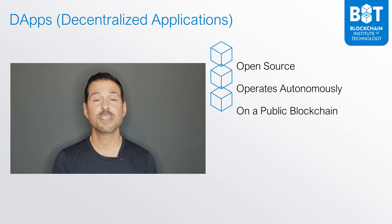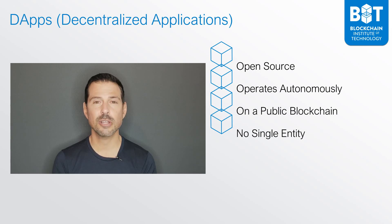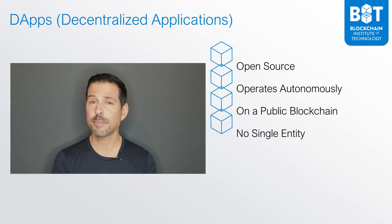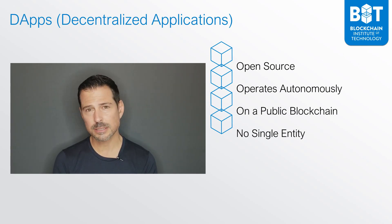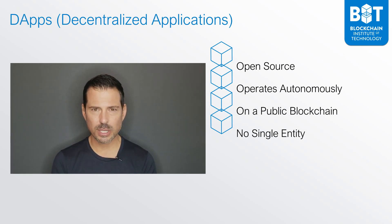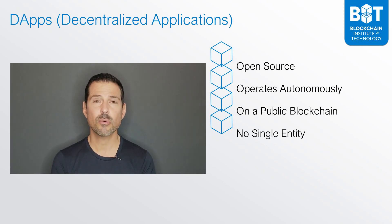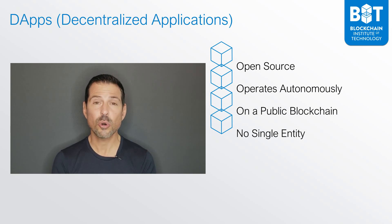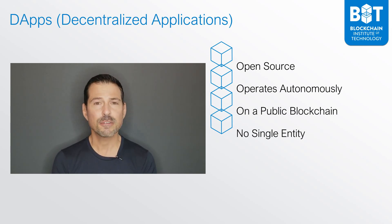A dApp must simply have no single entity that actually makes the decisions for it, and no single entity can control the majority of its tokens. Any changes to Bitcoin need to be done in consensus with the Bitcoin network. No single entity can make any changes to Bitcoin because there is no CEO of Bitcoin. This is the same for dApps.